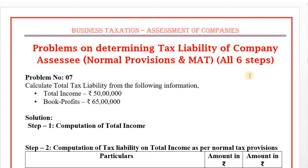Step 1: computation of total income as per normal provisions. Step 2: tax liability on normal provisions. Step 3: computation of book profit. Step 4: computation of tax on book profit. Step 5: tax liability — that is, comparison of step number 2 and step number 4. Step 6: tax credit.